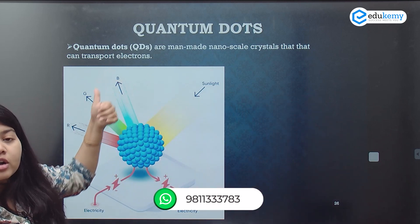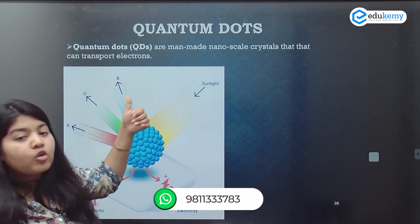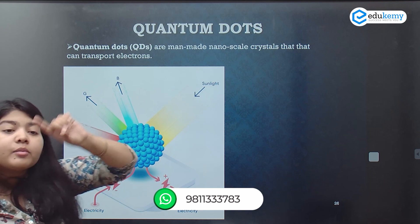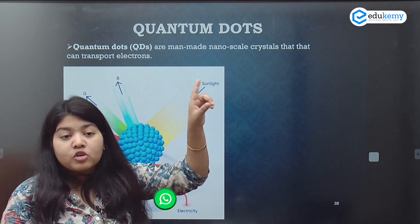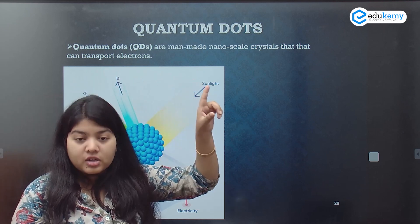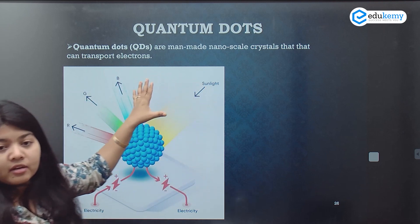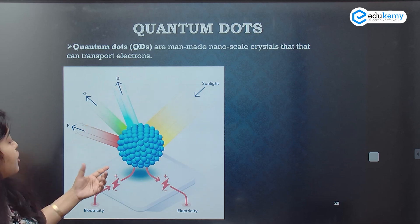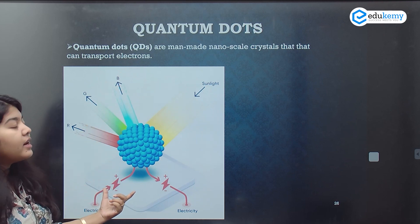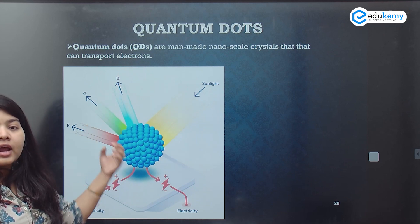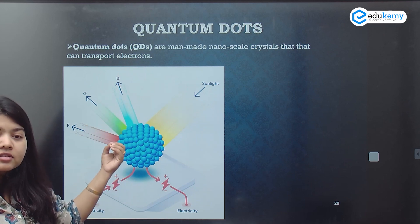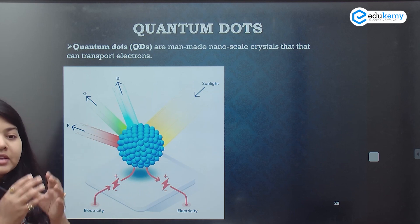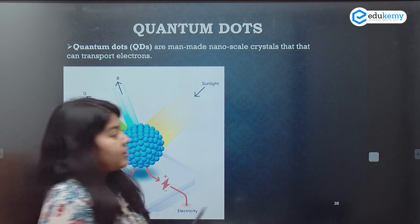Next important material: quantum dots. Now those were the carbon isotopes, so they were natural. This is man-made. This is man-made, which on providing electricity has the ability to transport electrons and basically illuminate.